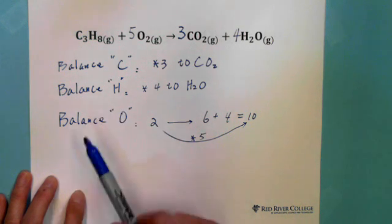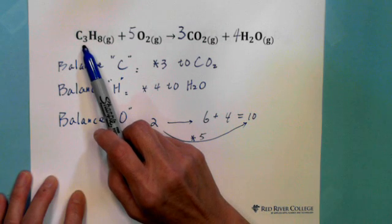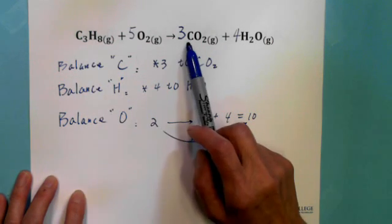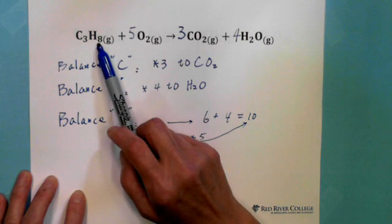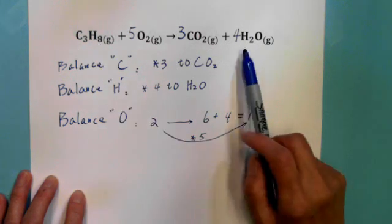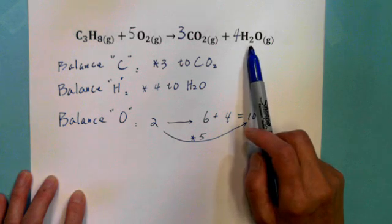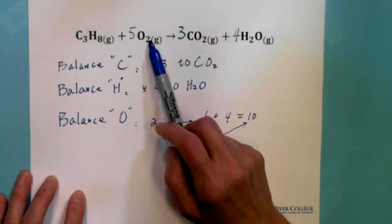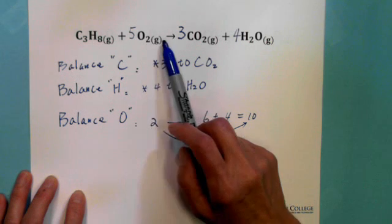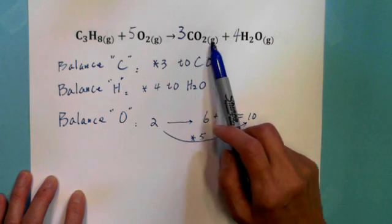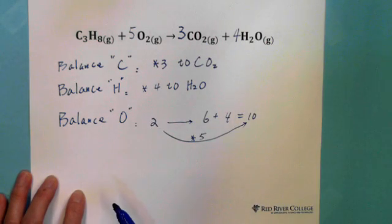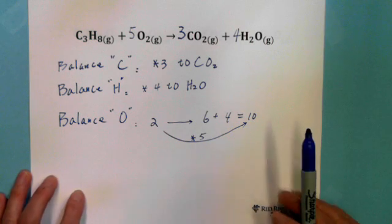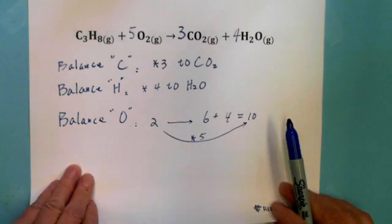Double check: before reaction, three carbon — after reaction, three carbon. Before reaction, eight hydrogen — after reaction, eight hydrogen. Before reaction, ten oxygen (five times two) — after reaction, six plus four equals ten. So this equation is balanced.